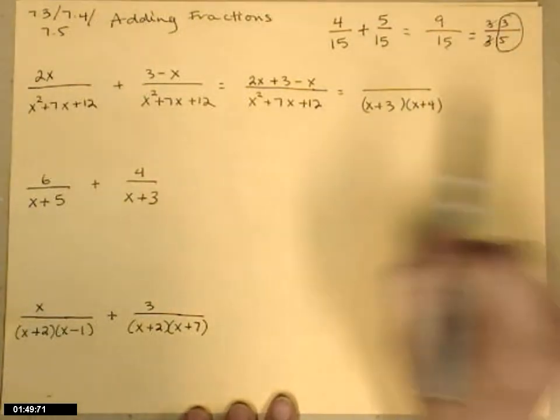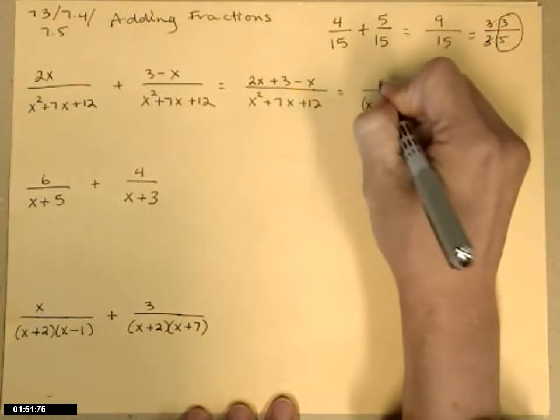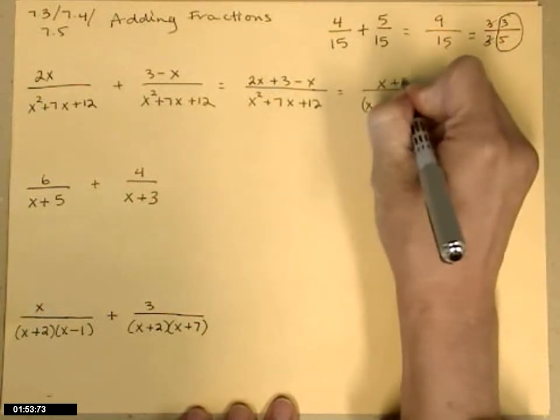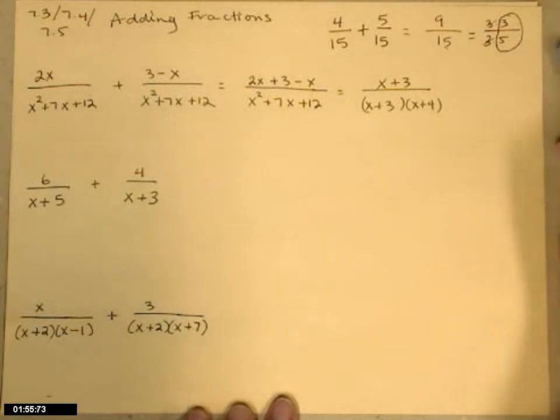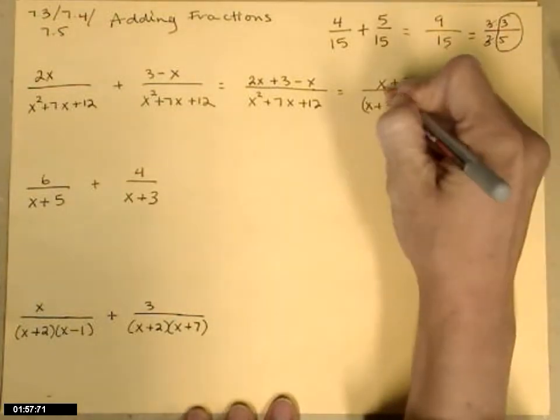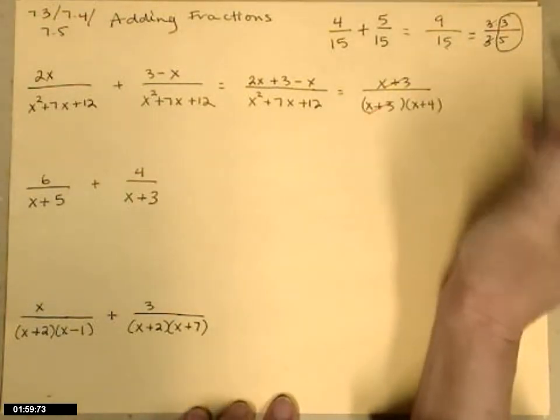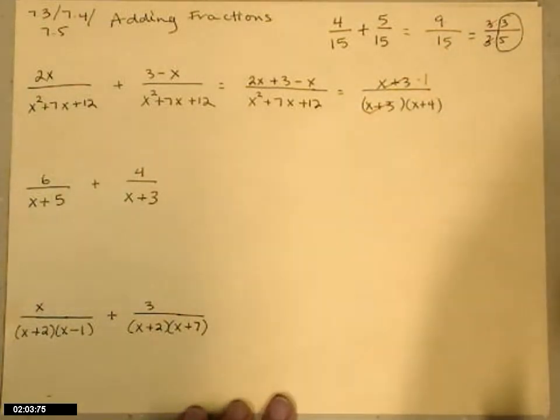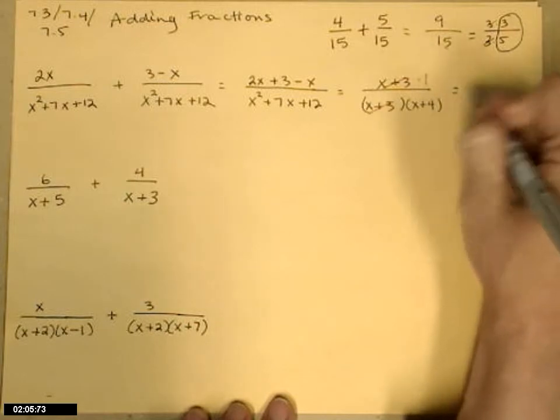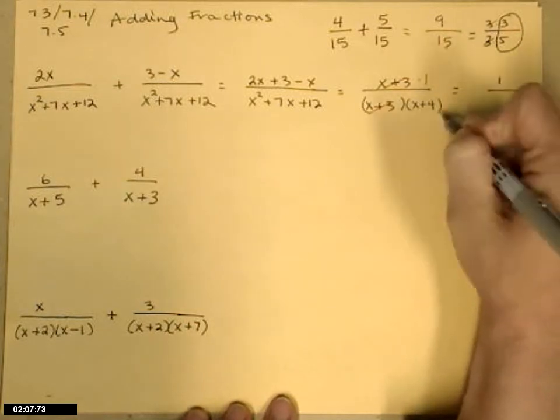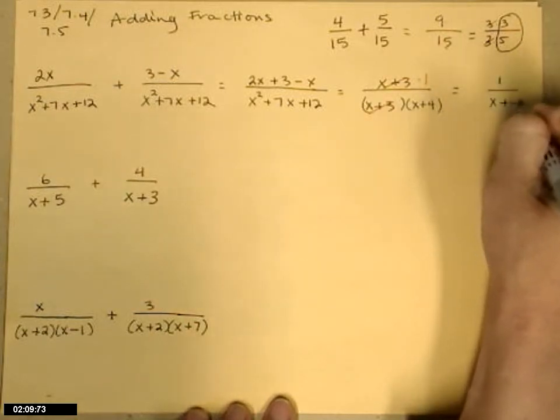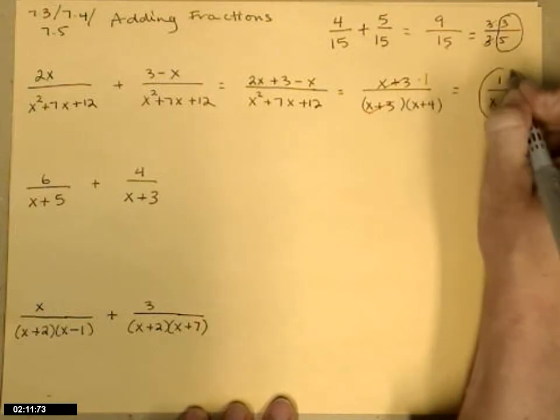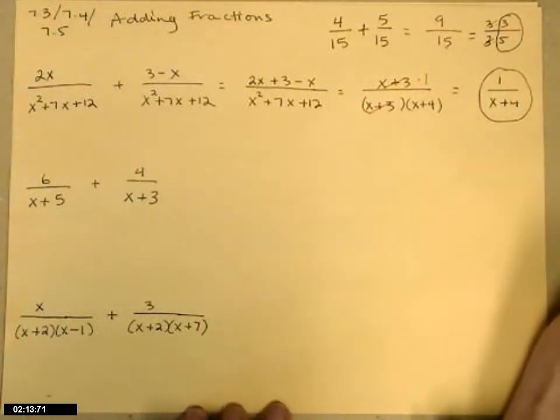In the numerator, combining like terms, 2x minus x is x plus 3. Now you see those common x plus 3s, so let's go ahead and cancel. Here's where that leaving behind the 1 is helpful to actually write the 1. Because your answer, the numerator is 1 and the x plus 4 is in the denominator. Note that that is an entirely different amount than x plus 4 itself. 1 over x plus 4 is our answer.